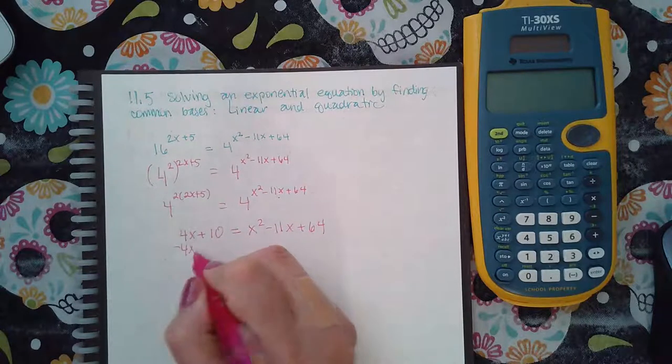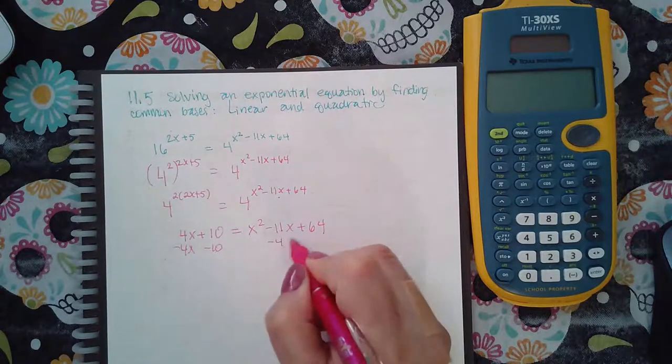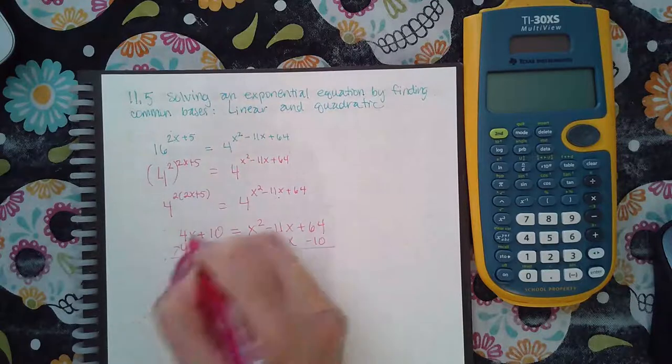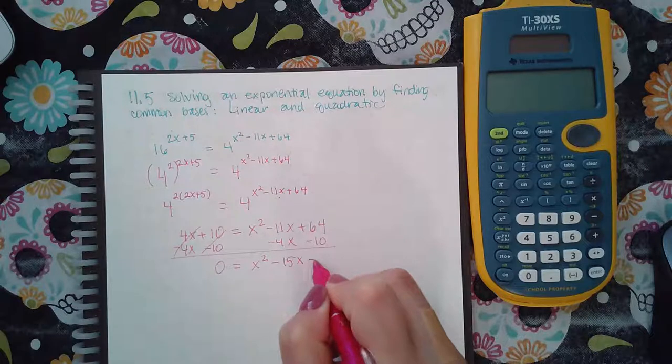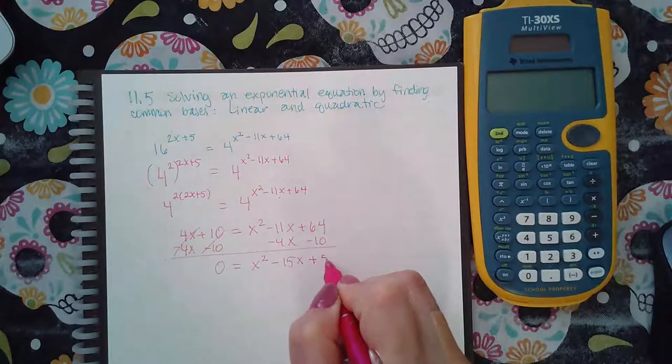So I'm going to minus 4x and minus 10 on both sides. So I get 0 equal to x squared minus 15x plus 54.